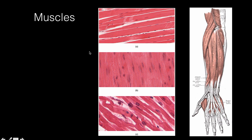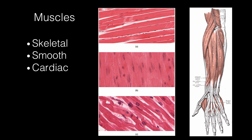As far as muscles go, there are three types of muscles: skeletal, smooth, and cardiac. Skeletal muscle is the kind of muscle that is attached to your skeleton. It's voluntary, so you can control it, and it pulls on bones and helps you move.